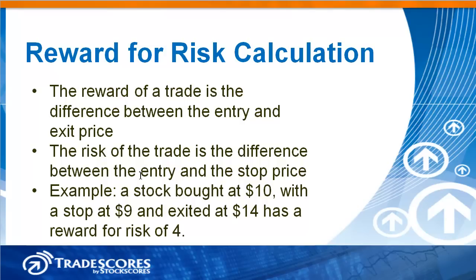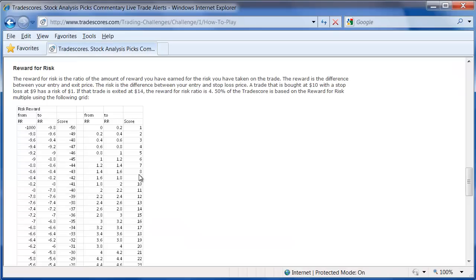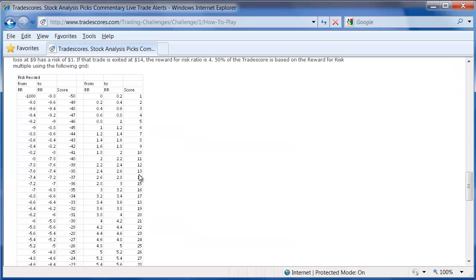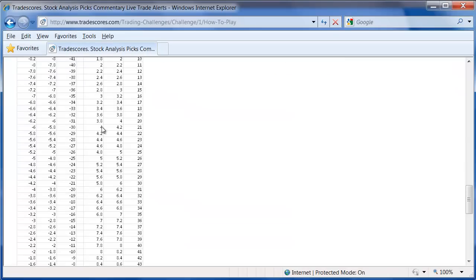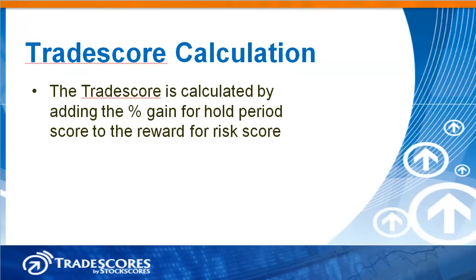We can then jump over to the How to Play document and look up the value 4 in the reward for risk table. A reward for risk of 4 earns 20 points. The total trade score is calculated by simply adding the score for percentage gain for hold period with the reward for risk score, giving you a maximum score out of 100.